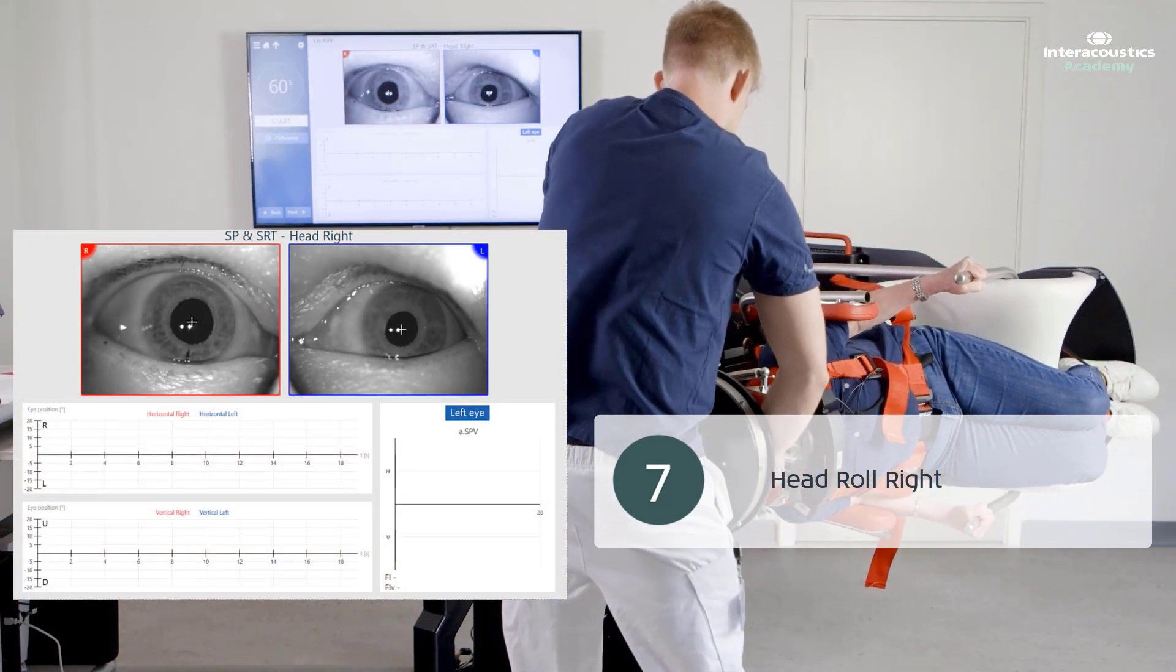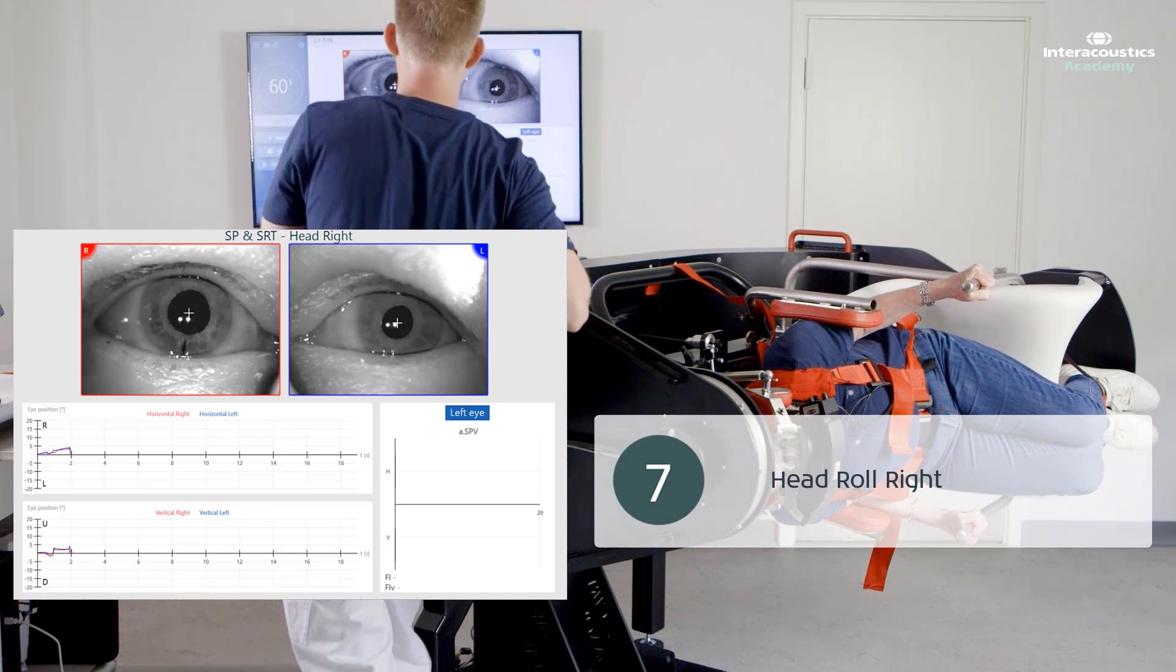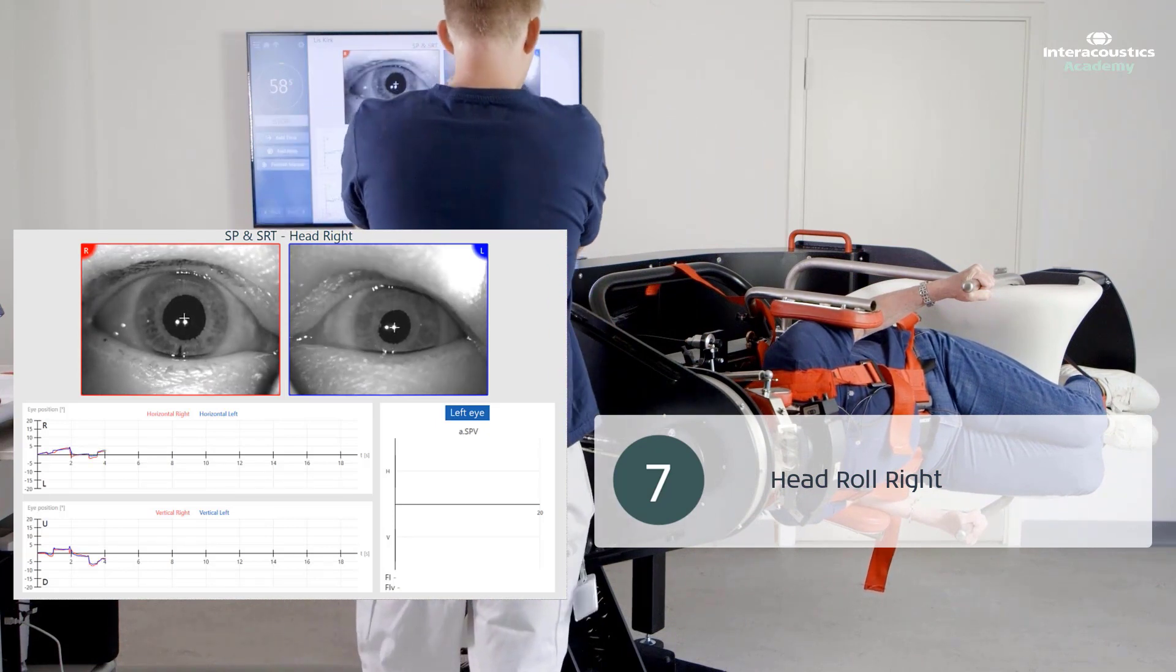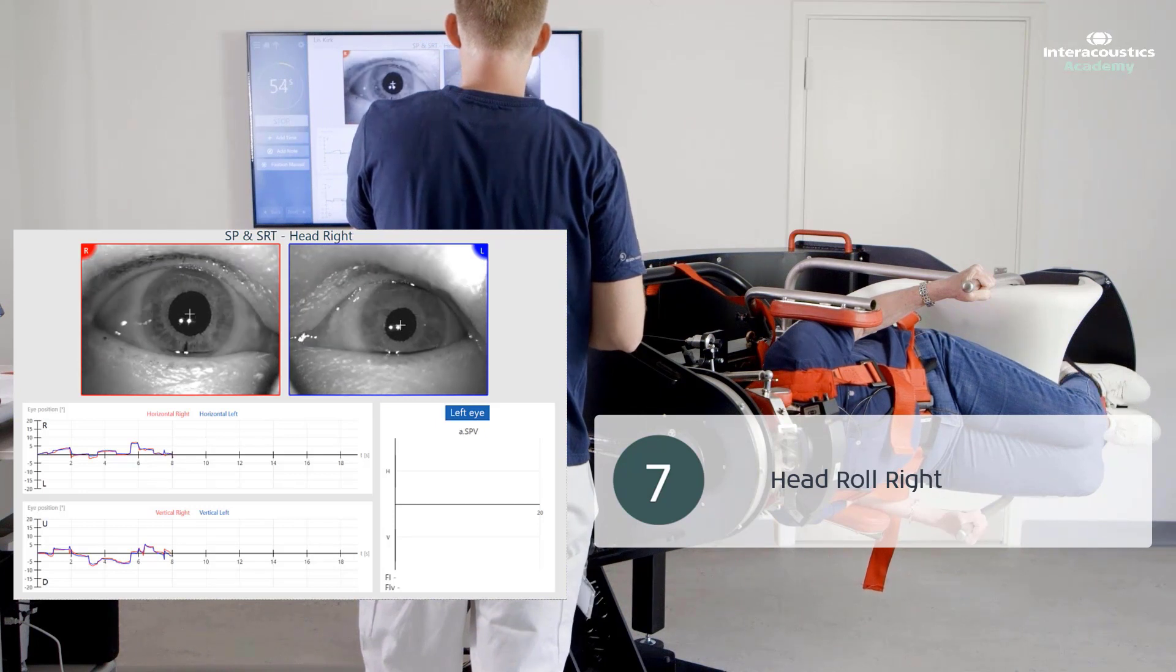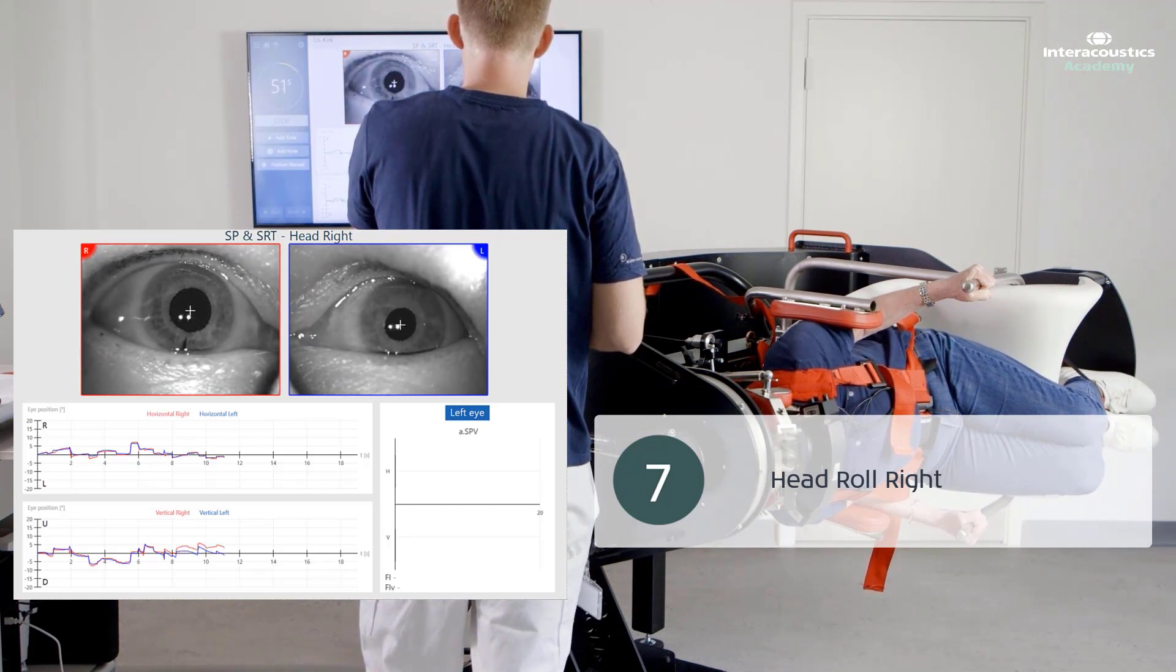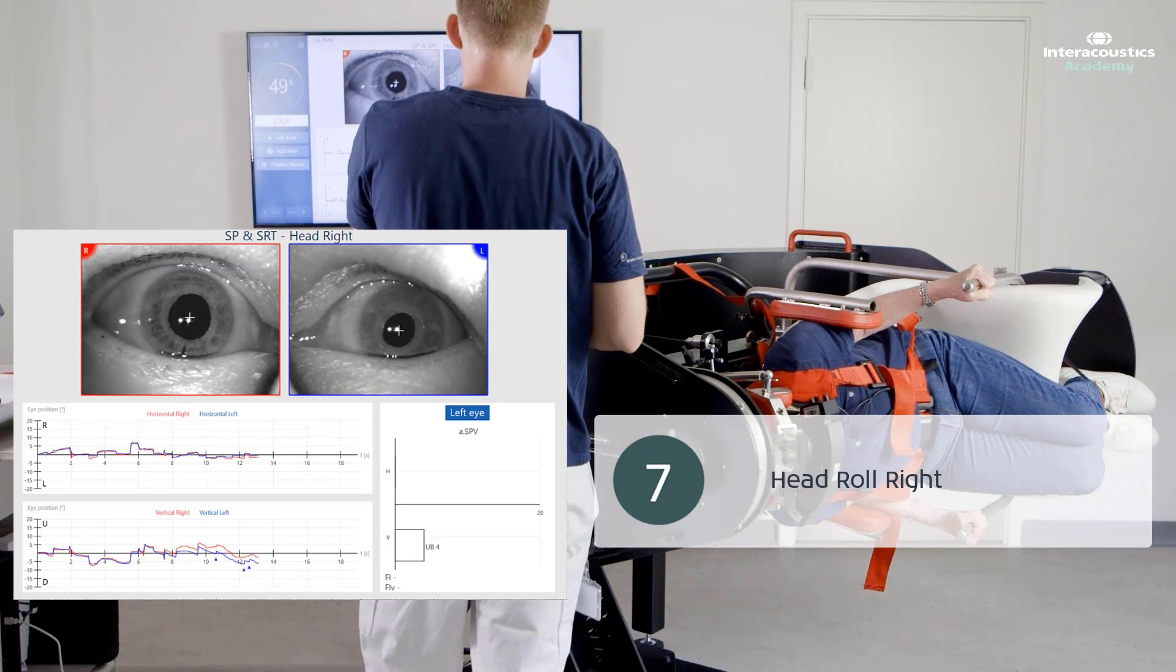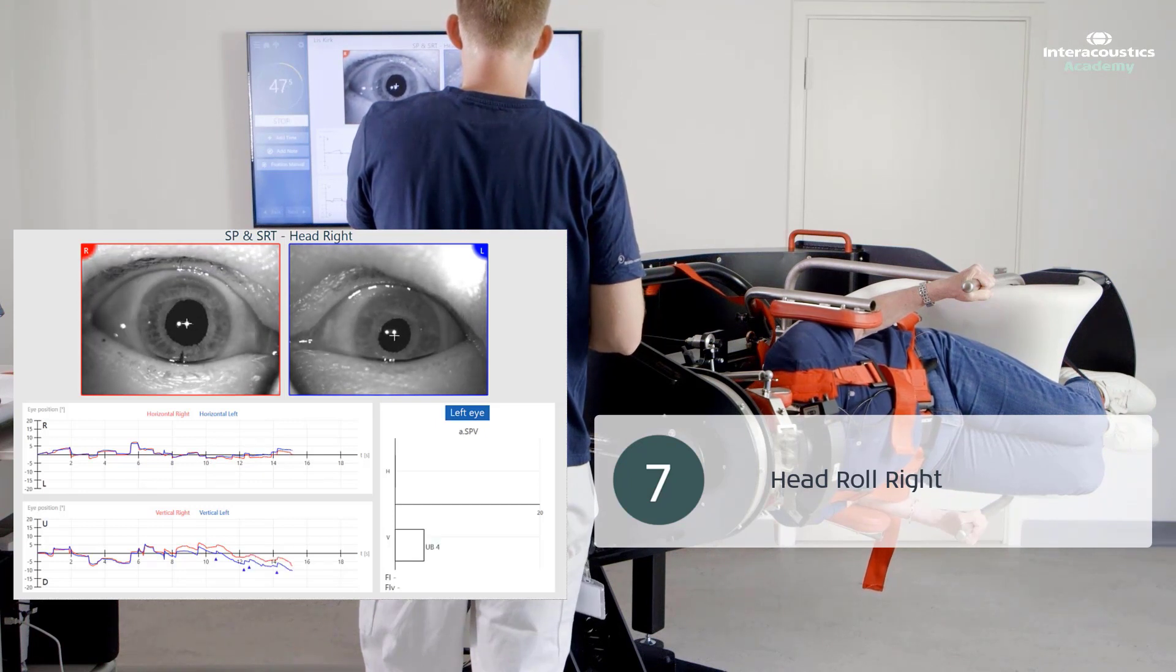With the patient in the right supine roll test position, instantaneous and persisting positional nystagmus is observed. Please also note that the observed positional nystagmus is upbeating and rotational and is present as long as the patient is kept in this test position.